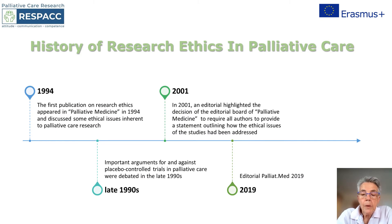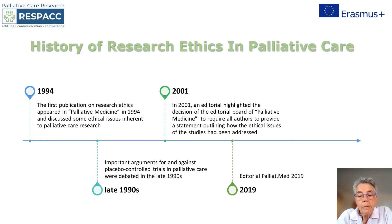How about the history? If we look at this editorial in the Journal of Palliative Medicine in 2019, we will see that the first publication on research ethics appeared in palliative medicine back in 1994, and discussed several ethical issues in research. Looking at publications in the 90s, authors were dealing with placebo-controlled trials and whether it was ethical to use placebo as subjects in trials in palliative care. In 2001, a breakthrough happened when the editorial board of the Journal of Palliative Medicine required all authors to provide a statement outlining ethical issues in their studies.